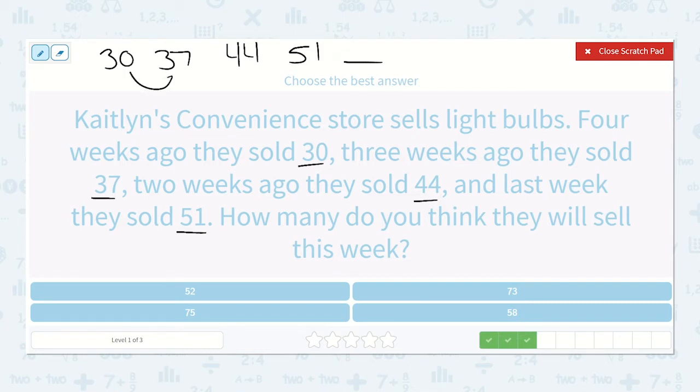So 30 to 37, I can see that they added 7. And then 37 to 44, well, I know 37 to 40 is 3, and then 4 more, so that is 7 again. And then 44 to 51, that is also 7. So let's do 51 plus 7, then, to find what the missing number is. 51 plus 7 is 58.